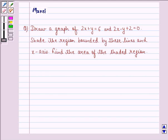The question says, draw a graph of 2x plus y equals 6 and 2x minus y plus 2 equals 0. Shade the region bounded by these lines and x-axis. Find the area of the shaded region.